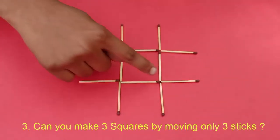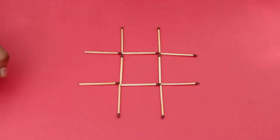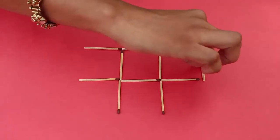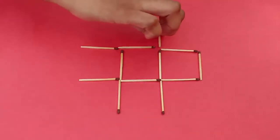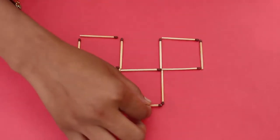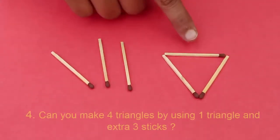Now for the third puzzle. Can you make three squares by moving only three matchsticks? It is quite easy. Right now you see only one square, but by moving just three matchsticks, you can make three squares instead of one.